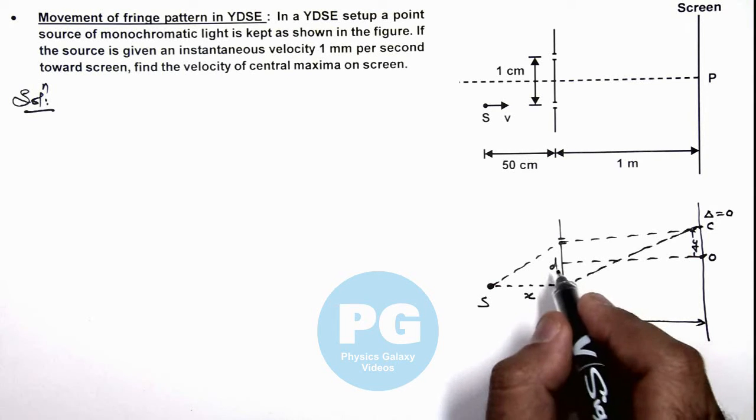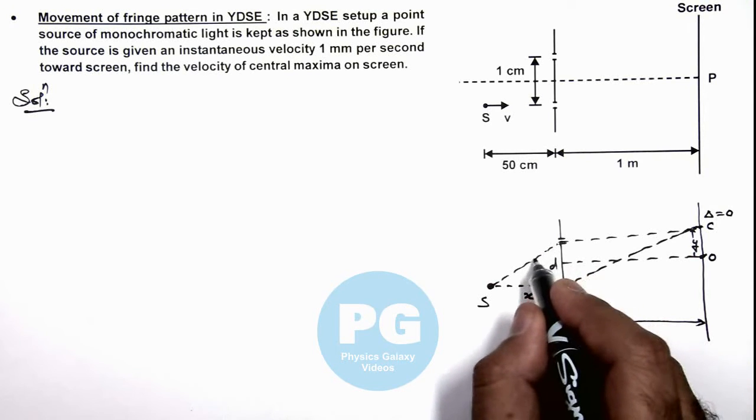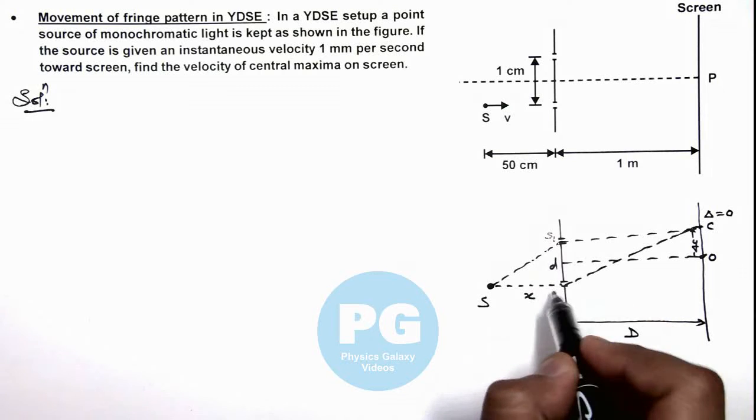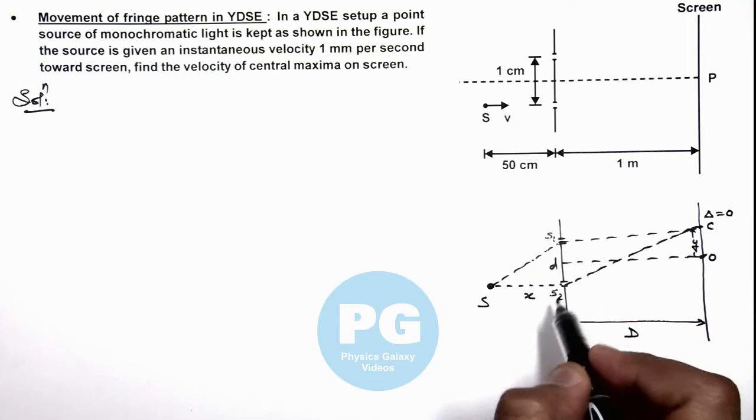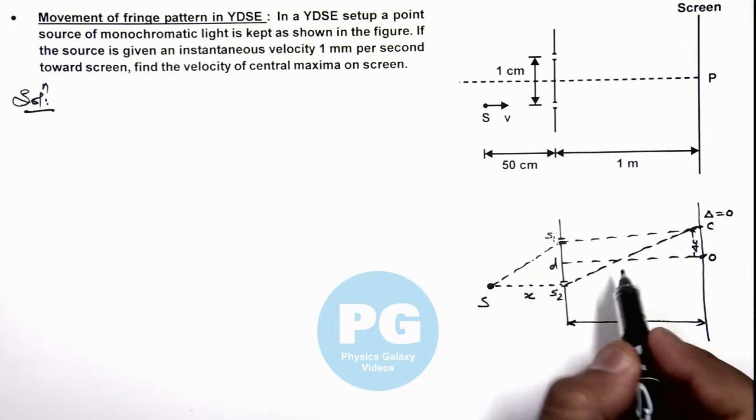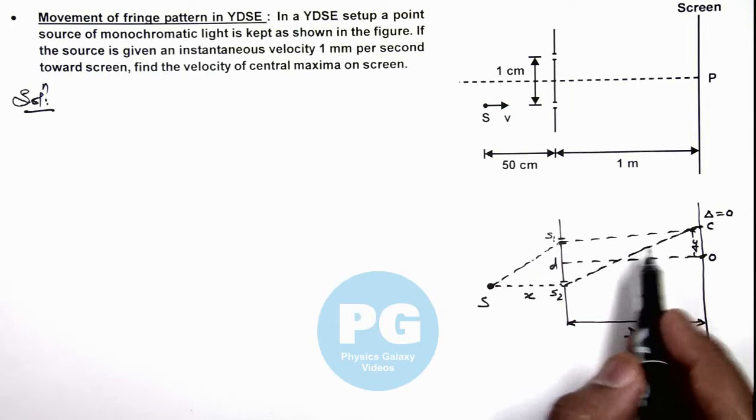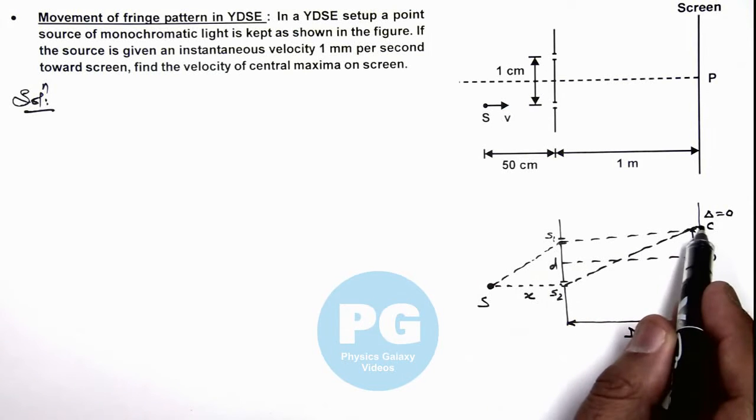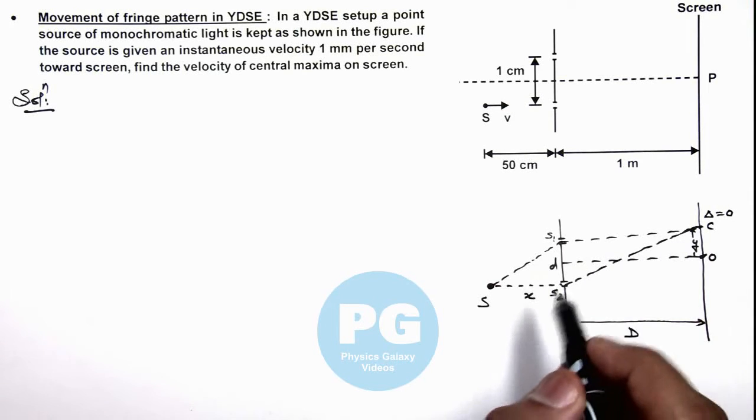This must be equal to the path difference after the slit plane to point C. Then only we can say this would be the central maxima. So here we can write, if central maxima is located a distance y from screen center O.